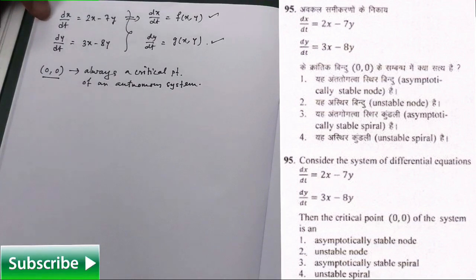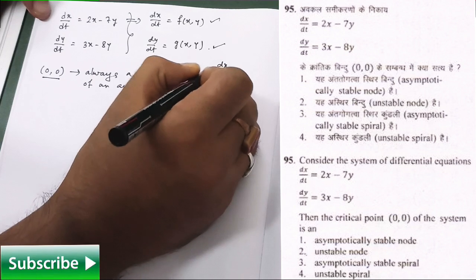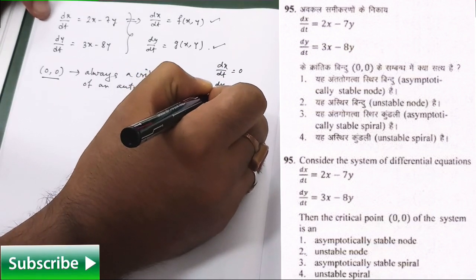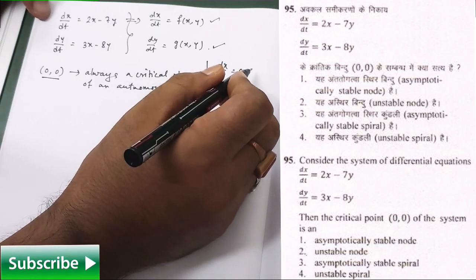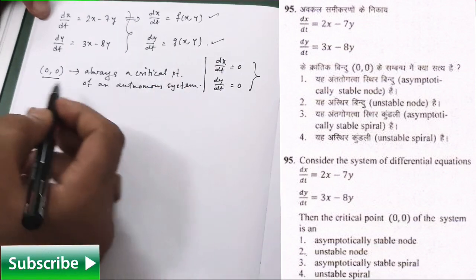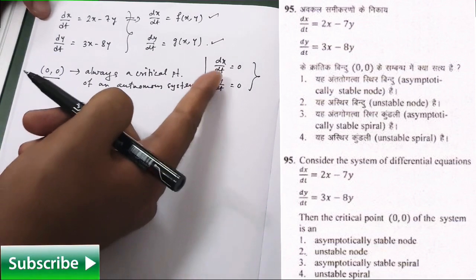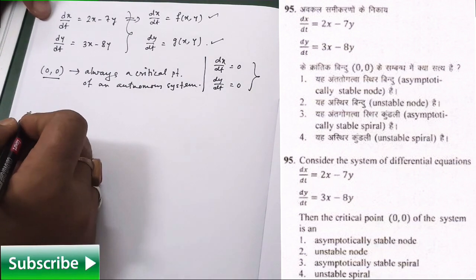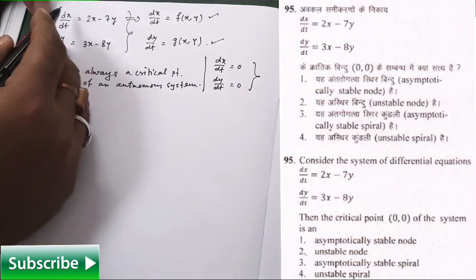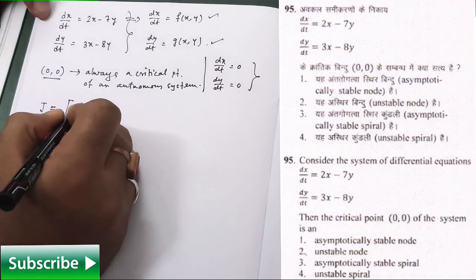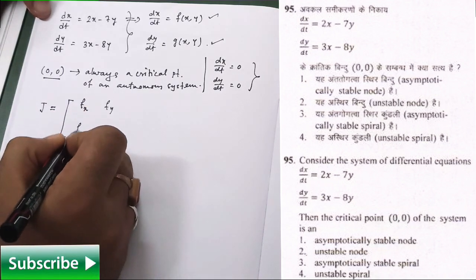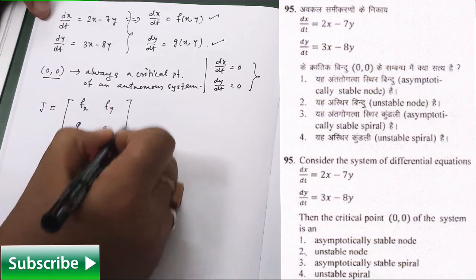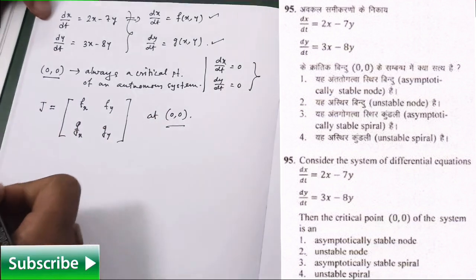Look at here, (0,0) is given as critical point. But suppose they are not providing us the critical point (0,0). In that case simply make dx/dt equal to 0 and dy/dt equal to 0 and then you will have two equations and solve them you will get the critical points. But in this problem we don't need to do all these things. We just need to find the nature of this critical point. So for that purpose you need to construct a matrix which is called Jacobian matrix corresponding to this autonomous system. Jacobian matrix is something like this. So you have to find out fx, fy, here gx, gy at (0,0).